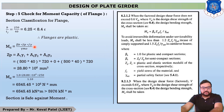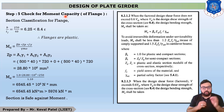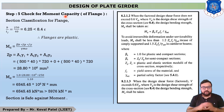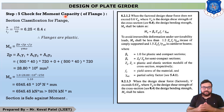Now let us move to step number 5, which is the check for moment capacity. It is already discussed that only the flange portion resists bending moment. So we have to check whether our selected section's flange is plastic, compact, semi-compact, or slender.